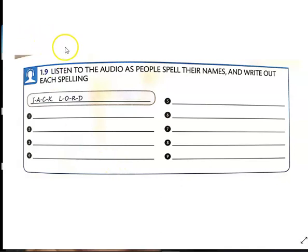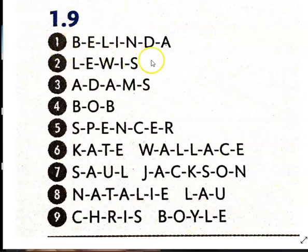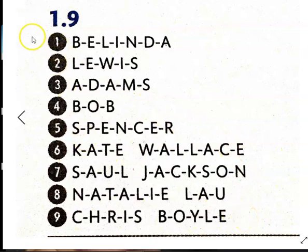Now I'm going to give you a minute — pause the recording, make sure you have your final answers, replay it if you need to. Then check your answers for 1.9. Here are the spellings of the names, 1 through 9. How did you do?